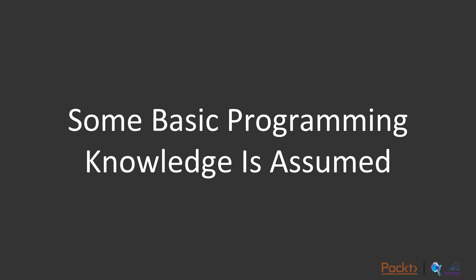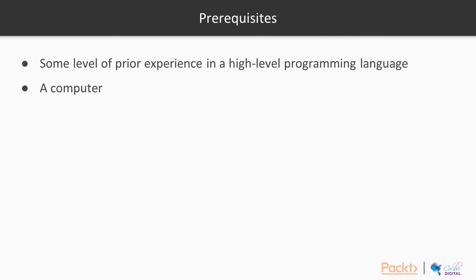Some basic programming knowledge is assumed — I'm not going to teach you how to code in this course, but if you've programmed in any high-level programming language, you won't have any trouble following along. In terms of prerequisites, you'll need some level of prior experience in a high-level programming language, and of course a computer. If you want to follow the code examples and actually build stuff yourself, you're going to need an AWS free-tier account and a connection to the internet. You'll also want to install the AWS CLI on your computer and Visual Studio Code or some other equivalent text editor.